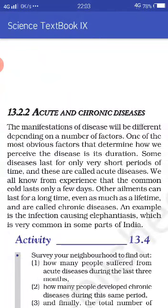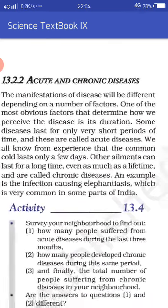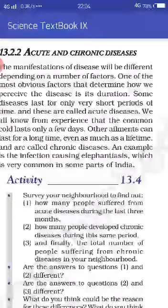Disease do types ke hote hain: acute and chronic disease. The manifestations of disease will be different depending on a number of factors. One of the most obvious factors is its duration. Some diseases last for only very short periods of time, and these are called acute diseases. For example, the common cold lasts only a few days — jo thode hi short time period ke liye hoti hain, woh sab acute diseases hain.